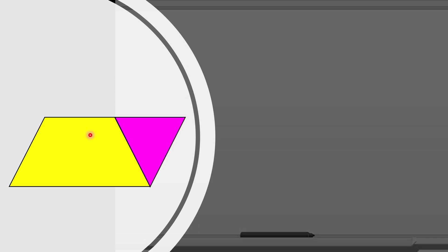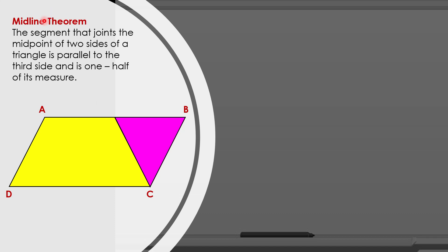If you notice, we have already formed a parallelogram. Let us name this parallelogram ABCE. Going back to our theorem, it says the midline should be parallel to the third side, which here is side DC. So the midline should be parallel to DC, and since we already have a parallelogram, these two opposite sides are already parallel — which is true. Next, the measure of the midline is one half the measure of the third side, so DC should be twice the measure of our midline, which is also confirmed by our observations.